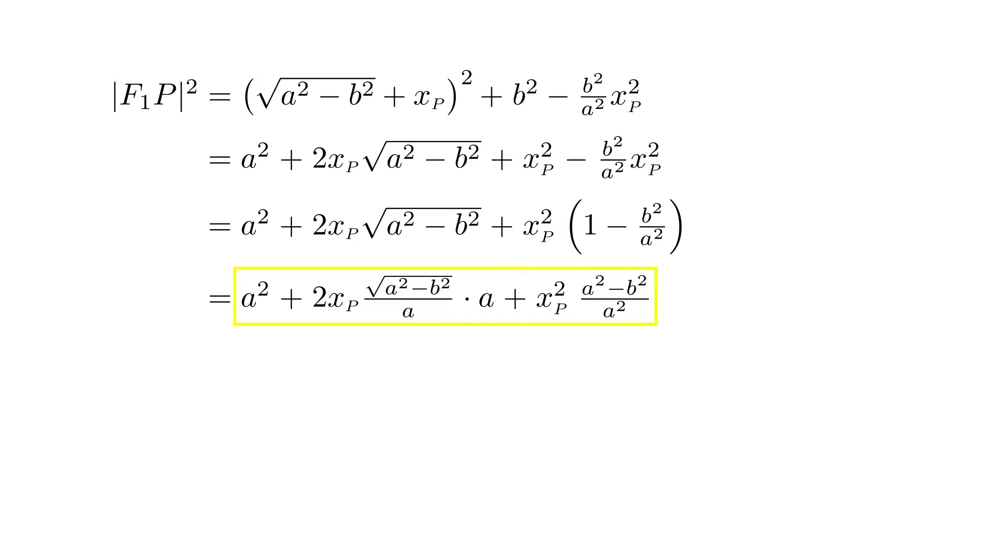Now, this entire expression has the form of the square of a binomial. And it's equal to a plus xP times the square root of a squared minus b squared over a, and all of that squared. So that's |F1P| squared which means that |F1P| is equal to the absolute value of the expression inside parenthesis.